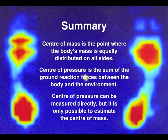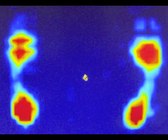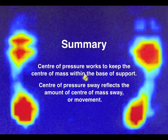The body has both a centre of mass and a centre of pressure. And while the centre of pressure can be directly measured with force plates or pressure mats, the centre of mass is indirectly estimated using multi-marker-based analysis with motion tracking software. The centre of pressure is related to the centre of mass, in that the centre of pressure works to keep the centre of mass within the base of support.